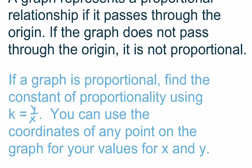Now, if it is proportional — if it passes through the origin — you can find the constant of proportionality using the same equation we used yesterday: k is equal to y over x. To find the values for y and x, you can use the coordinates for any point on the graph. Let's take a look at a couple of examples.